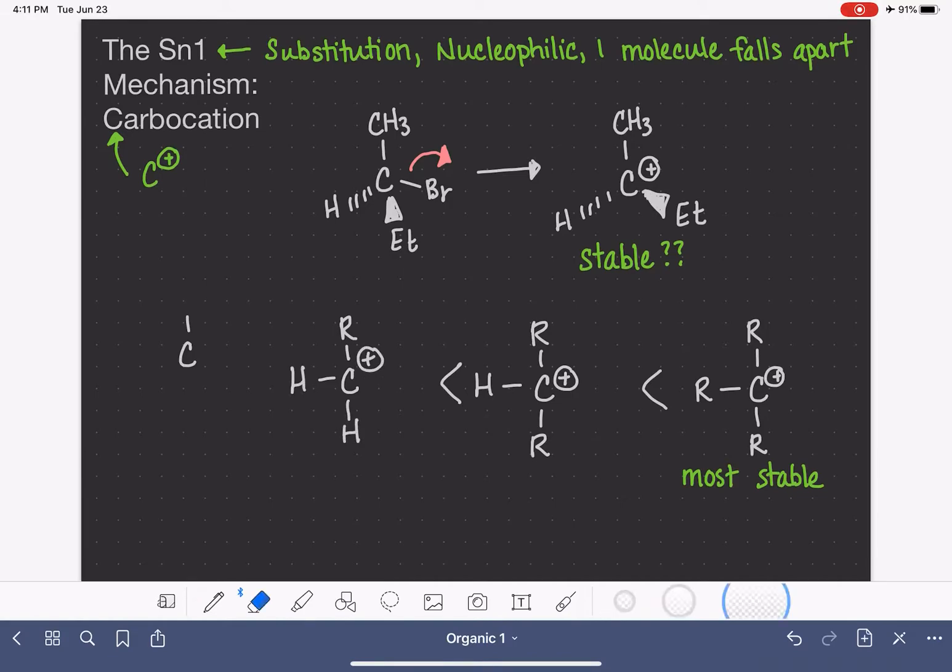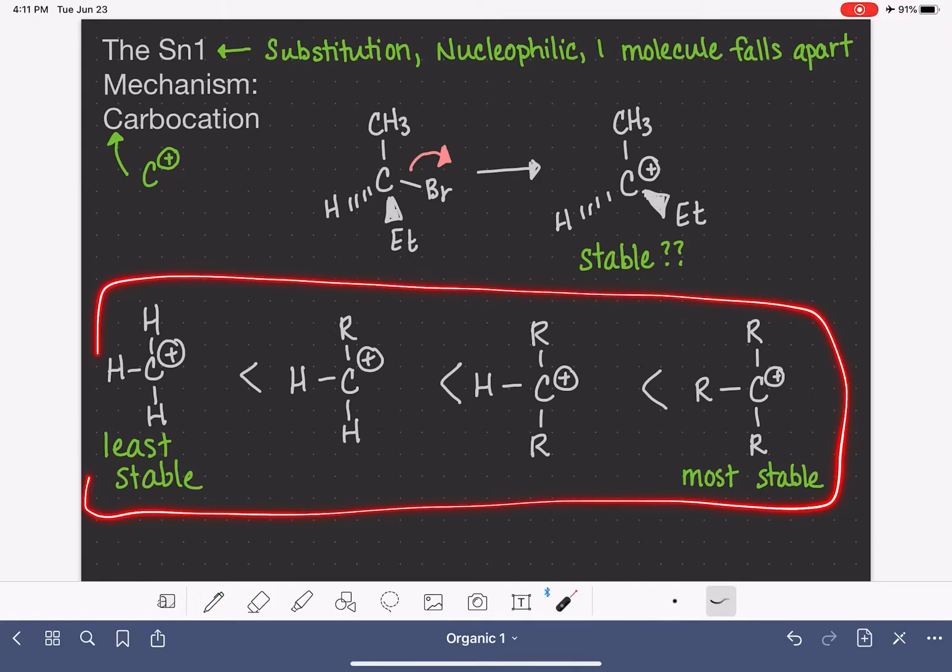And then last but not least, our least stable is a carbocation with only hydrogens on it. This is called the methyl carbocation. So this is the least stable of all of the carbocations. And so we can make some generalization by looking at the stability of our carbocations.